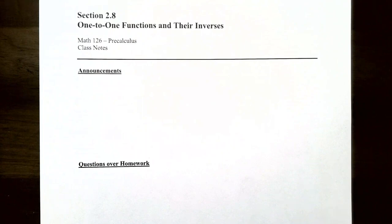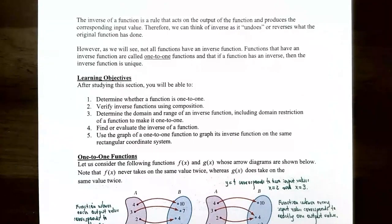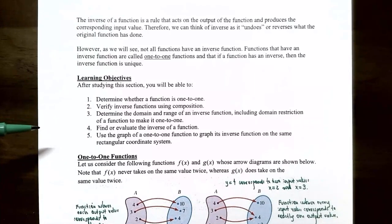Hi everyone, it's Professor Fermenton and this video is going to finish up our discussion on one-to-one functions and their inverses. In the previous video we talked about the definition of a one-to-one function, how to verify whether two functions are inverses using composition, and the domain and range of an inverse function. In this video we're going to talk about how to find and evaluate the inverse of a function, and also how to use the graph of a one-to-one function to graph its inverse.